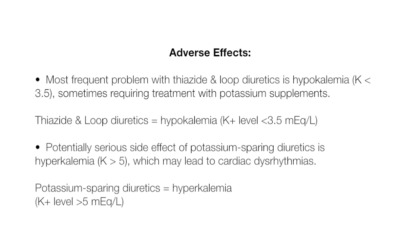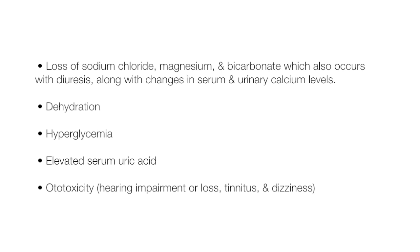The major adverse effects of diuretics are fluid and electrolyte imbalances. The most frequent problem with thiazide and loop diuretics is hypokalemia, where potassium is less than 3.5, sometimes requiring treatment with potassium supplements. The potentially serious side effect of potassium-sparing diuretics is hyperkalemia, where potassium is greater than 5, which may lead to cardiac dysrhythmias. Other adverse effects of potassium-losing diuretics include loss of sodium chloride, magnesium, and bicarbonate, along with changes in serum and urinary calcium levels, dehydration, hyperglycemia, elevated serum uric acid, and ototoxicity — which includes hearing impairment or loss, tinnitus, and dizziness.